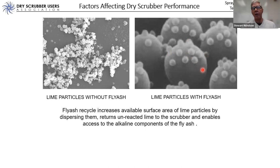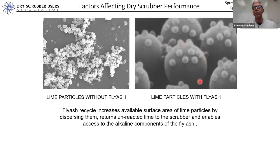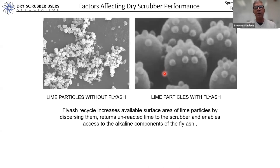In addition, those fly ash particles also spread out the water — the fluid injected to humidify the gas and control temperature spreads out in a thin film around these fly ash particles. When spread out in a thin film around a large sphere, the water dries much more efficiently because more surface area is available for drying. So fly ash helps in two ways: it disperses the lime for better utilization, and it disperses water for more efficient drying.